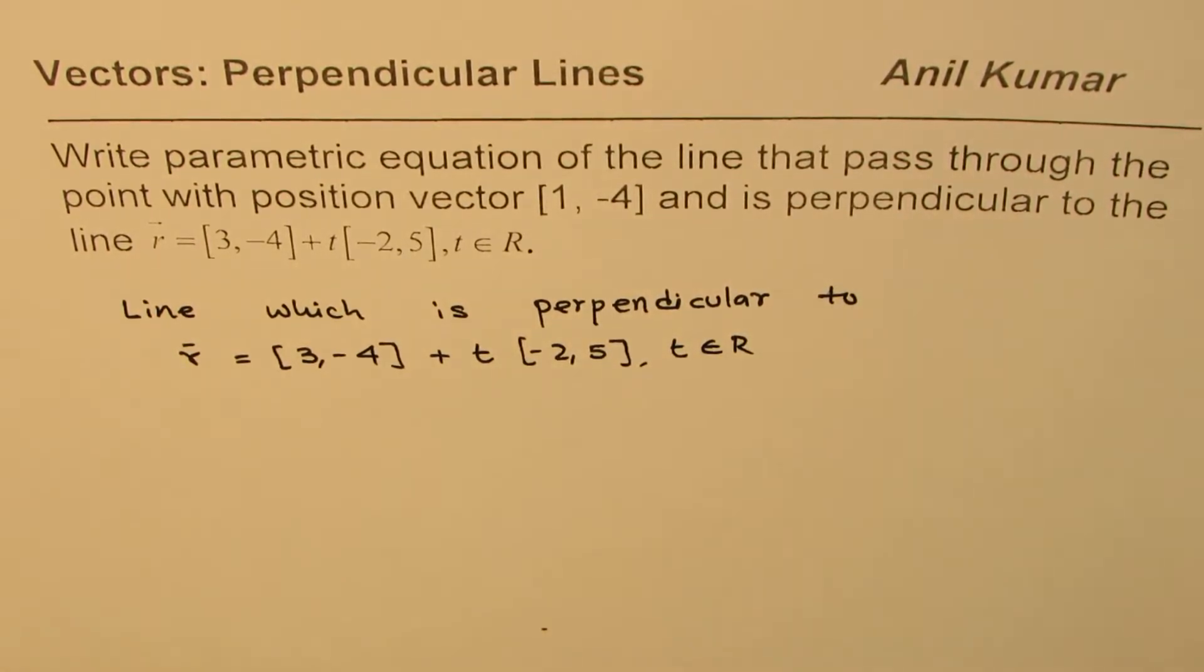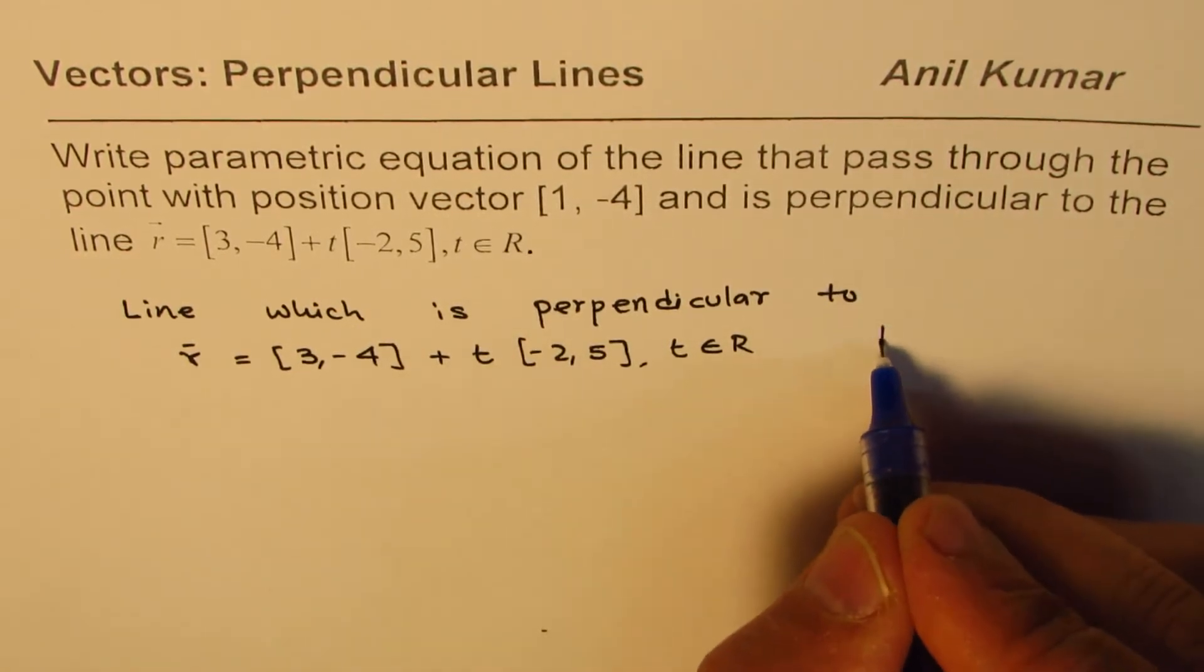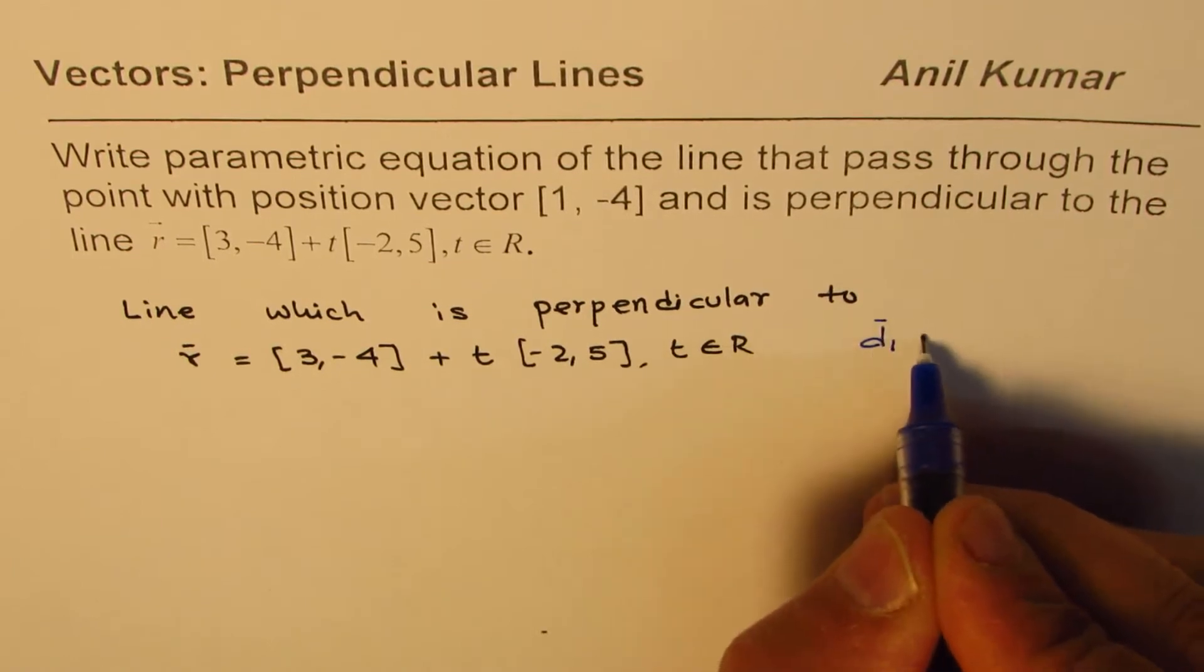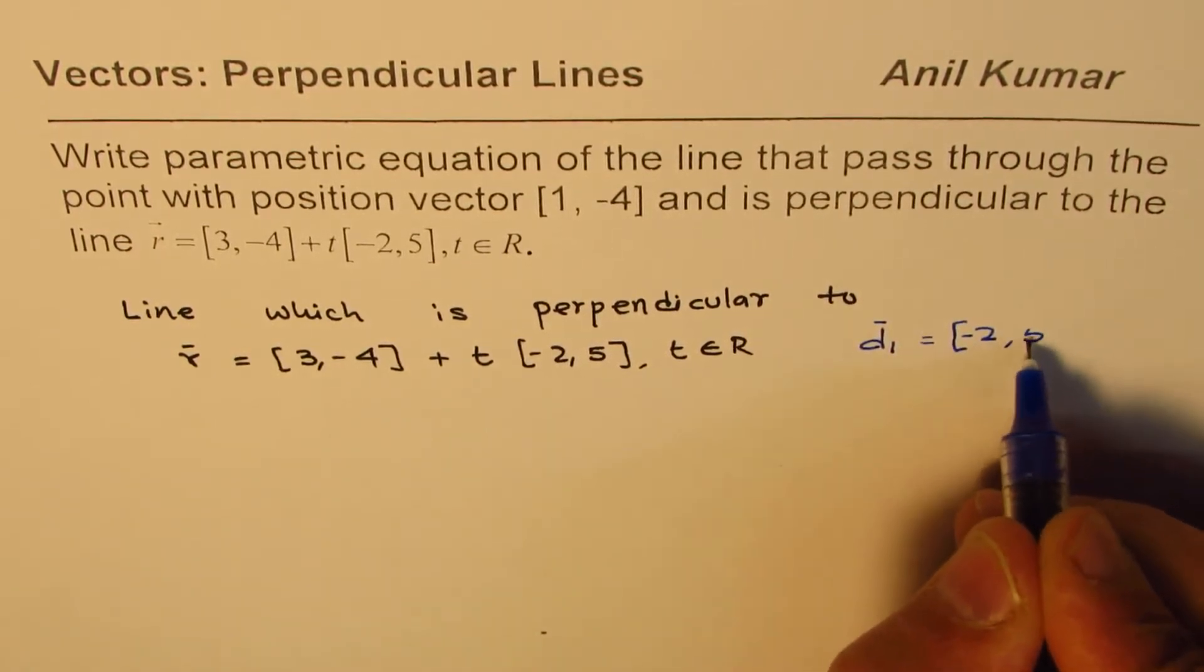So if you look at this line, we are given information about the direction. The direction here, let me write d1, can be written as [-2, 5].